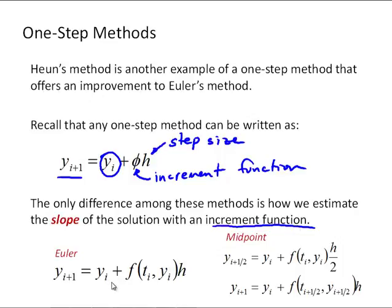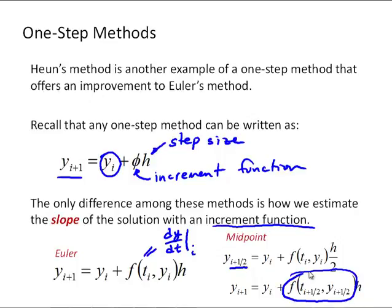So far we've looked at Euler's method, which uses the function that defines the differential equation itself, dy/dt, as the increment function evaluated at the i-th time step — basically assuming that the slope is constant for that i-th time step. The midpoint method used a predicted value at half the time interval and then used the slope calculated at that midpoint to predict y_i+1. We saw that was a little bit more accurate because it's like using a centered finite difference approximation.